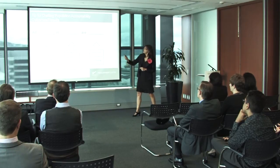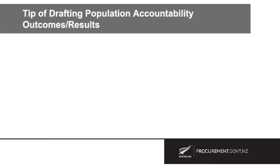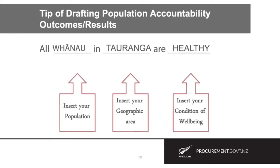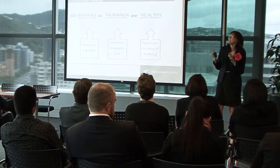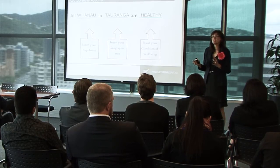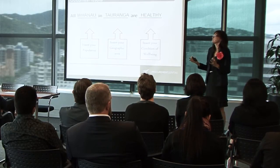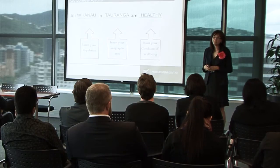Remember that population accountability is about a population. So we could say 'all families or whanau' and then you have a geographic area — it might be Tauranga, for example — and the condition of well-being or the outcome is 'healthy.' Population results or outcomes are high-level aspirational statements associated with a population in a geographic area.